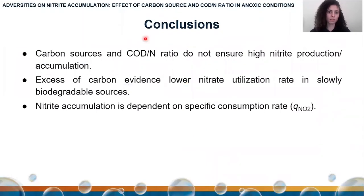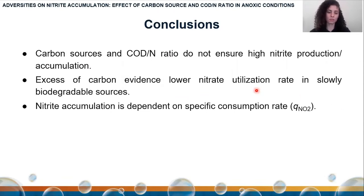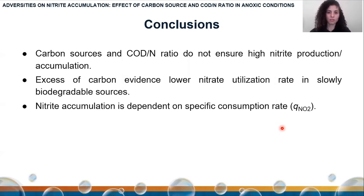The conclusions of this study: first, carbon source and COD:nitrogen ratio alone do not ensure high nitrite production or accumulation. Excess carbon evidenced a lower nitrate utilization rate with a slowly biodegradable carbon source — in our case, starch. Nitrite accumulation is dependent on specific consumption rate. Analyzing the NUR, we can better estimate nitrite production using NUR than only using the stoichiometric proportion. Thank you for watching — if you have any questions, please send me an email.